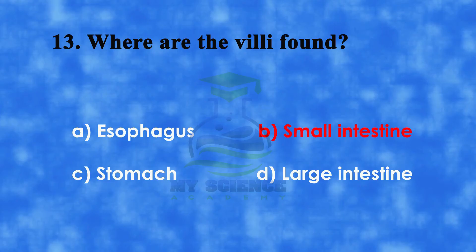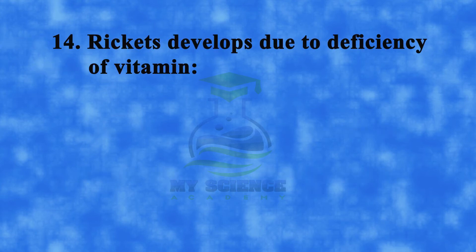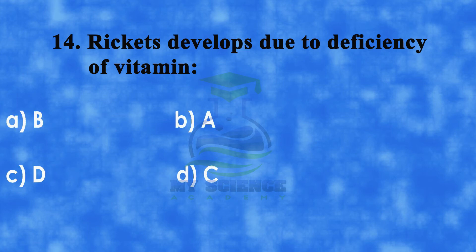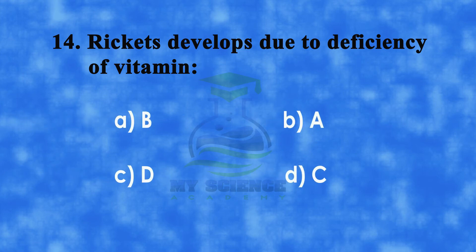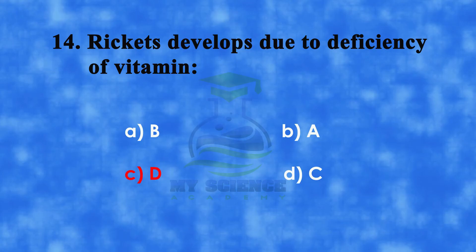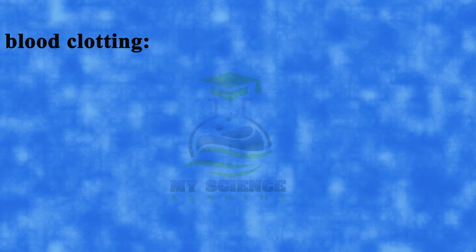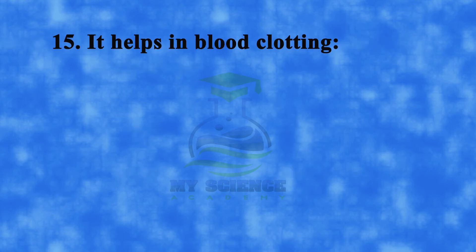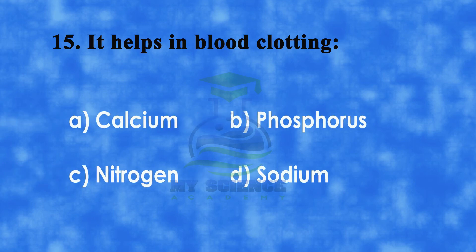The correct answer is b) small intestine. Question number fourteen: rickets develops due to deficiency of — a) vitamin B, b) vitamin A, c) vitamin D, or d) vitamin C. The correct answer is c) vitamin D. Question number fifteen: what helps in blood clotting? — a) calcium, b) phosphorus, c) nitrogen, or d) sodium.